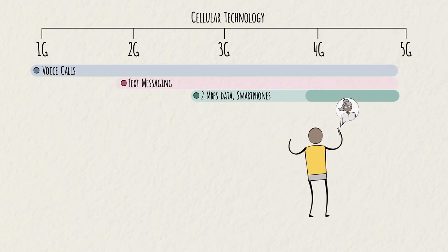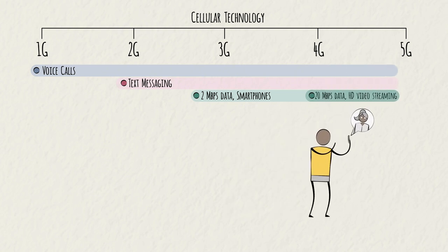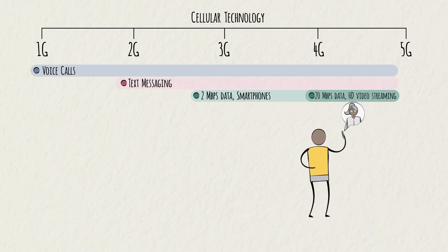4G increased the data speed another 10 times, with speeds up to 20 megabits per second. This now allows for streaming HD video content, including live video chats.